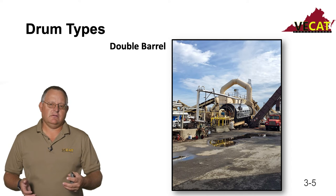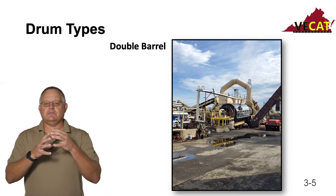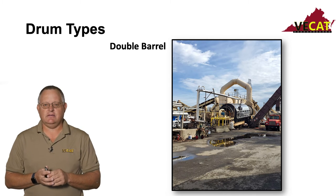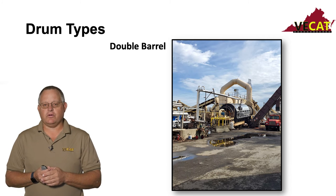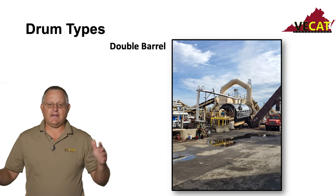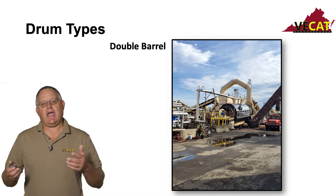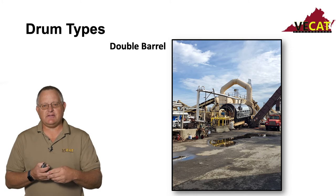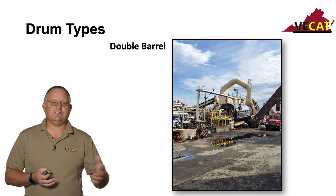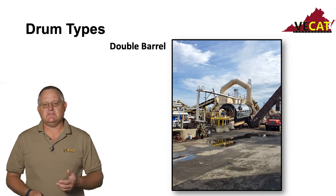Let's start with the double barrel. As you can imagine, it's two barrels — one on the center and a shell on the outside. Many of these drums are shorter than a standard single drum because of how they're designed. Most of your aggregate heating is done on the inside drum. Then you add the RAP, the binder, and other additives in the exterior drum, and the turning motion is what mixes the material together.